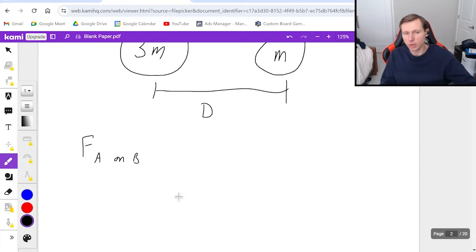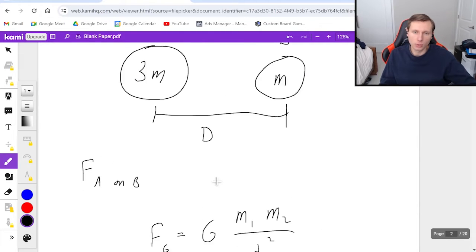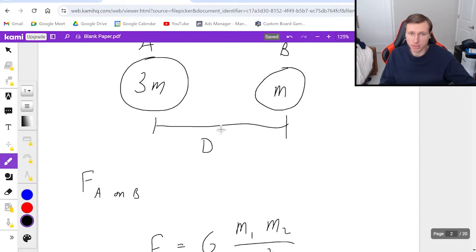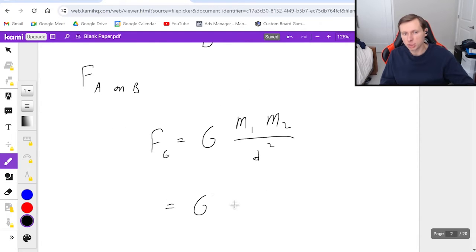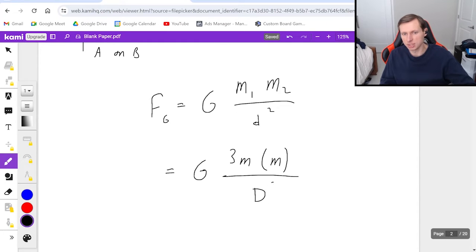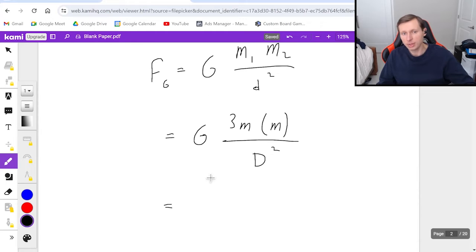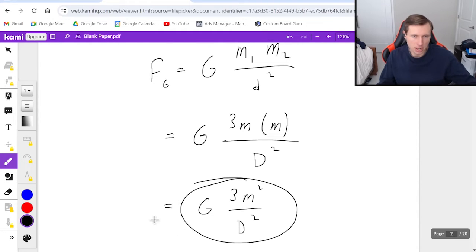So first I'm going to write the equation down again. F big G equals capital G times mass 1 times mass 2 over distance squared. It doesn't matter what we say is mass 1 and mass 2, we're going to be including both of them, which means it's just going to be capital G times mass 1, which is 3m times the second mass, which is little m divided by distance is capital D, and that's squared. And we can say that this simplifies to big G times 3m squared over D squared. And this is a fine answer.